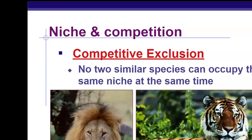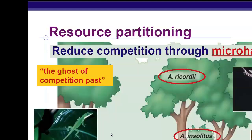Here's another example of competitive exclusion. No two similar species can occupy the same niche at the same time — that's the rule. The anolis lizards fill many different niches within an ecosystem and have evolved to be better suited to different spaces. This is micro-habiting, so there's reduced competition because they won't fill all of the niche. Over time, because they all fill different spaces, they don't have competitive exclusion.